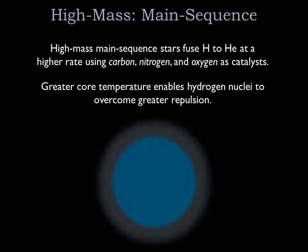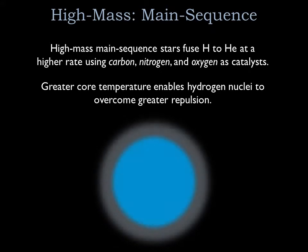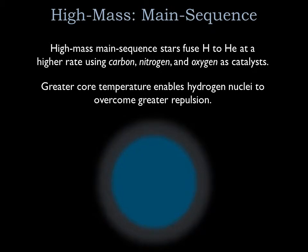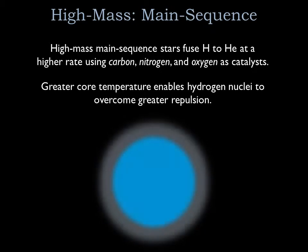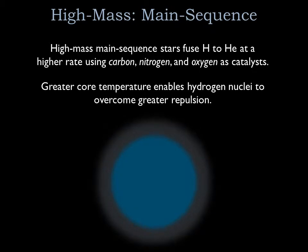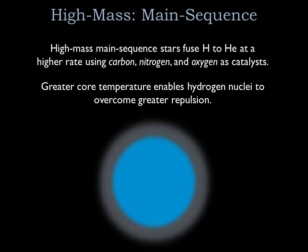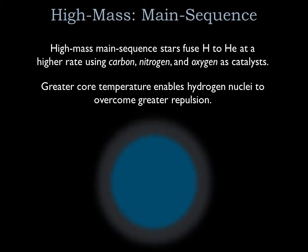Hydrogen fusion in a high-mass star proceeds through a different set of steps compared to low-mass stars. Low-mass stars fuse hydrogen into helium through the proton-proton chain. In a high-mass star, the strong gravity can compress the core to higher temperatures, making it possible for protons to slam into carbon, oxygen, or nitrogen nuclei, as well as into other protons. Although carbon, nitrogen, and oxygen make up less than 2% of the material from which stars form, this 2% is more than enough to be useful in the stellar core.